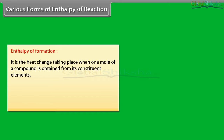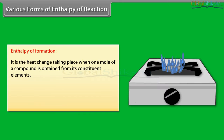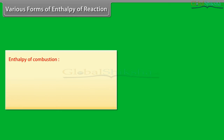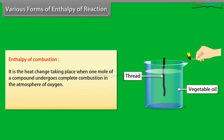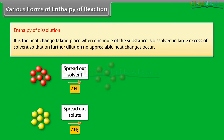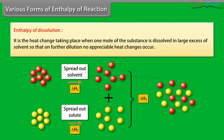Various forms of enthalpy of reaction. Enthalpy of formation: the heat change taking place when one mole of a compound is obtained from its constituent elements; the standard enthalpy of free elements is taken to be zero, and its value gives an idea of the chemical stability of the compound. Enthalpy of combustion: the heat change when one mole of a compound undergoes complete combustion in oxygen; always negative because combustion is exothermic. Enthalpy of dissolution: the heat change when one mole of a substance is dissolved in a large excess of solvent so that further dilution causes no appreciable heat change.